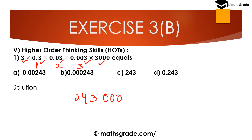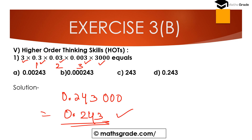With 6 digits after the decimal point, we move the decimal point 6 places to the right in 243000. Counting 6 places gives us 0.243000, which simplifies to 0.243 (trailing zeros after the decimal have no meaning). So option D — 0.243 — is the correct option. Therefore, 3 × 0.3 × 0.03 × 0.003 × 3000 equals 0.243.